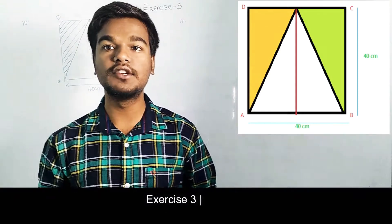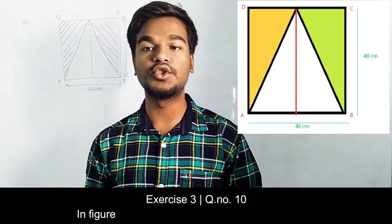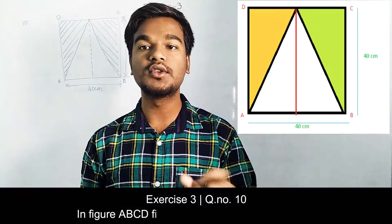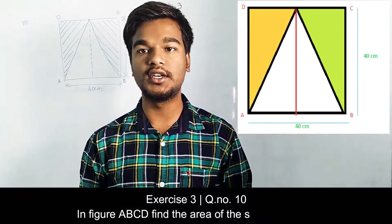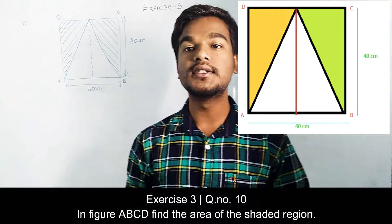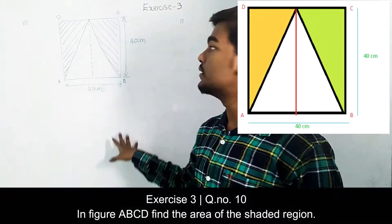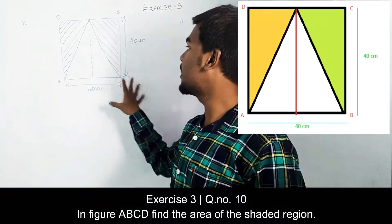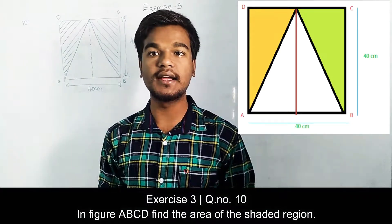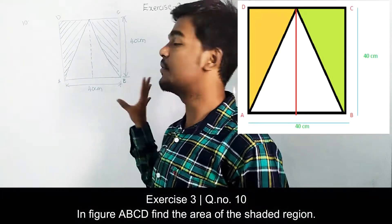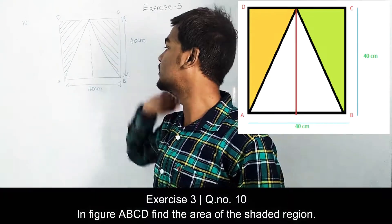In this module we are going to discuss the solutions for the 10th and 11th questions. Here we need to find what is the area of the shaded region in the given figure. For the 10th one, they have given a square with a triangle inside it, along with all the measurements, and we have to find the area of the two triangles.